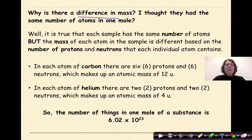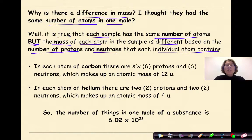Why is there a difference in mass? I thought they had the same number of atoms in one mole. Well, it is true that each sample has the same number of atoms, but the mass of each atom in the sample is different based on the number of protons and neutrons that each individual atom contains.